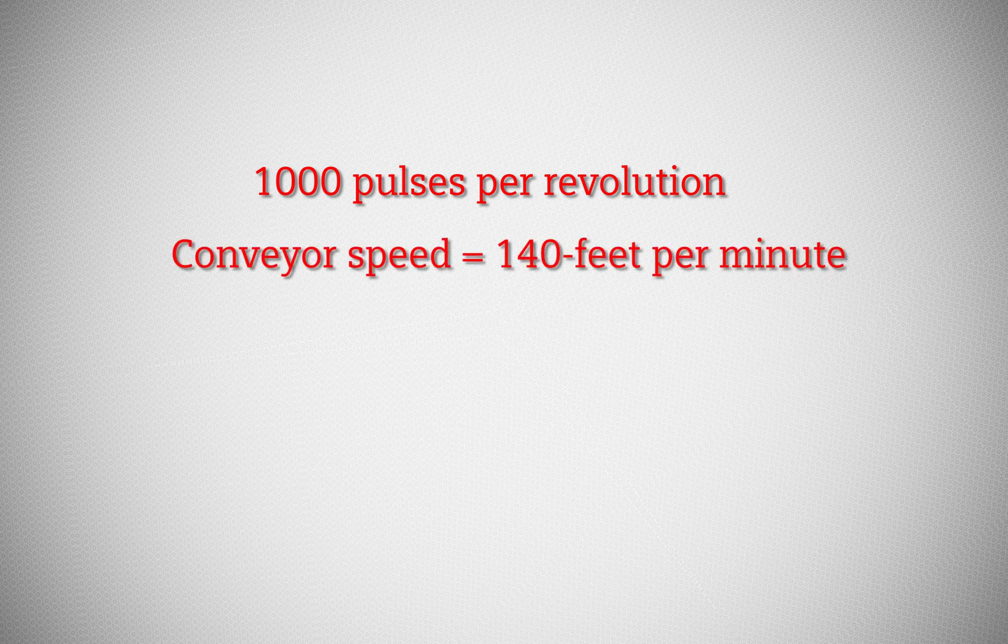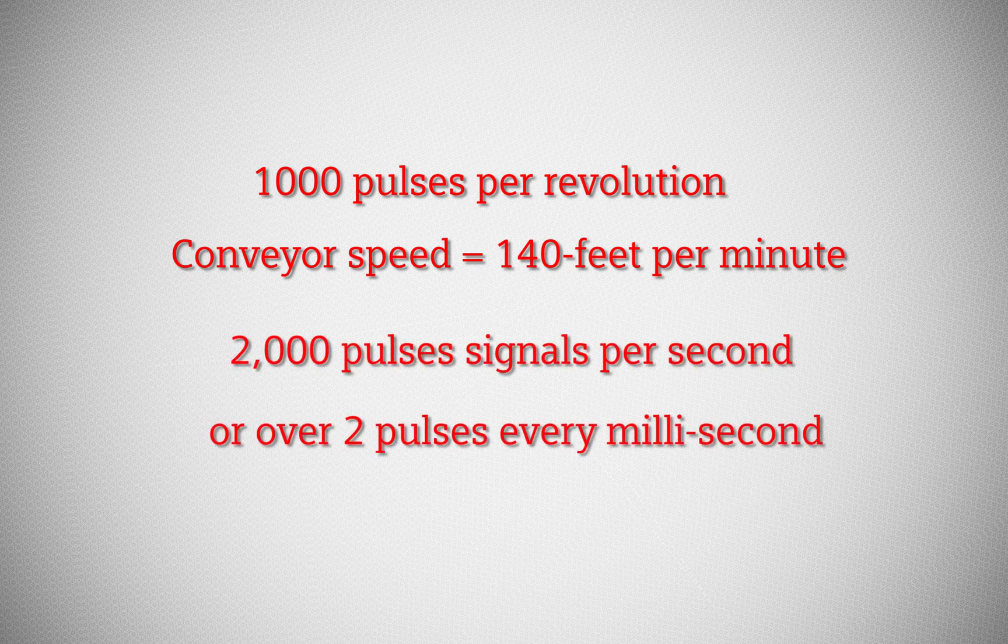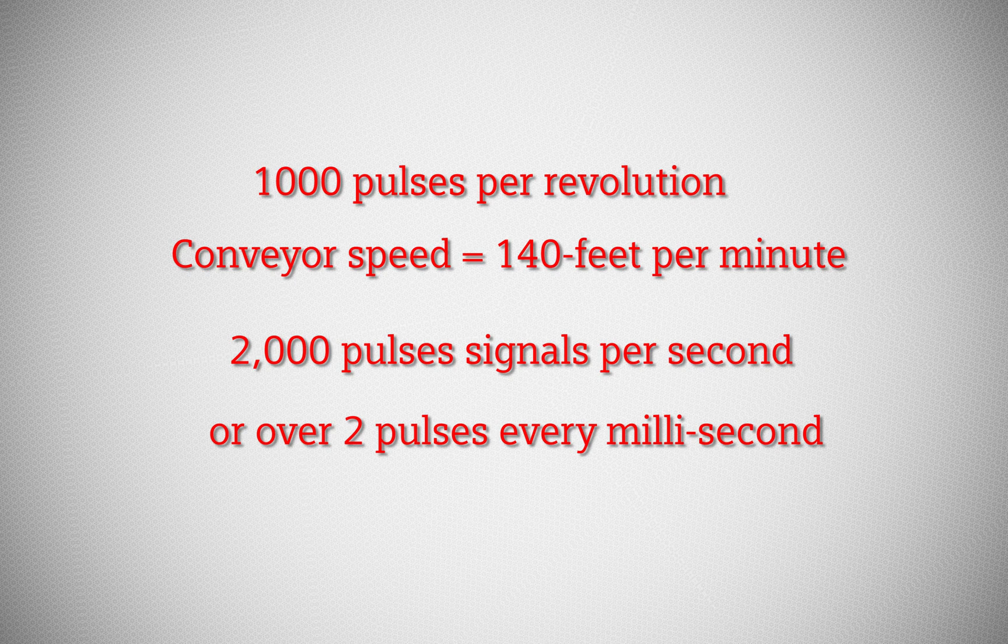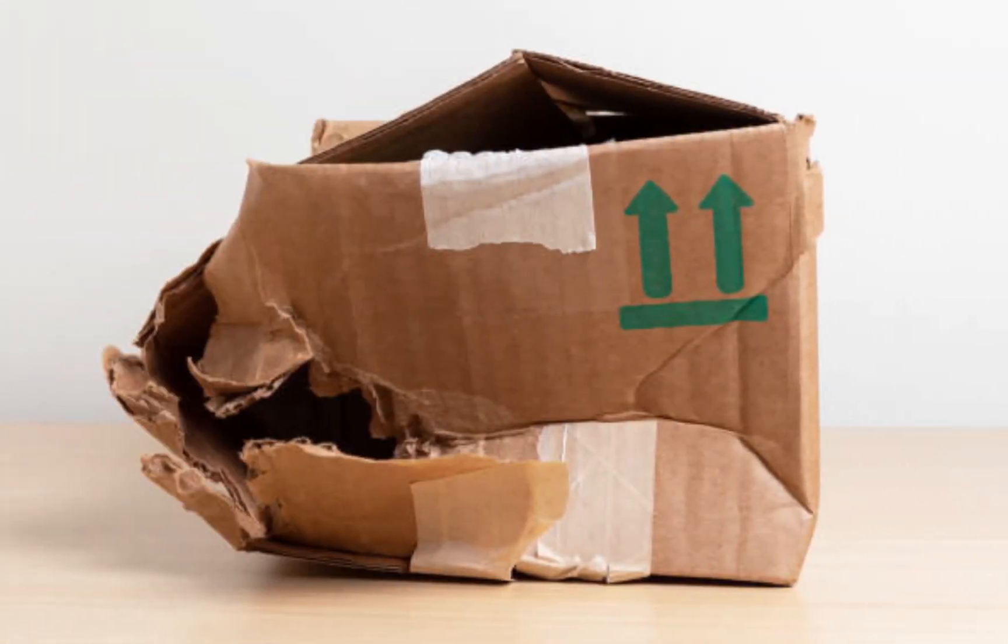This is over 2000 pulse signals per second, or over two pulses every millisecond. At that rate, the average CPU is bound to miss a few pulses and in turn could cause a diverter arm to miss or crush a box.